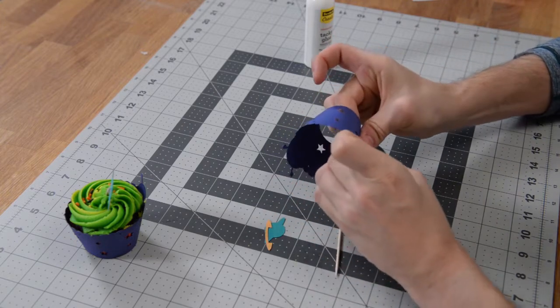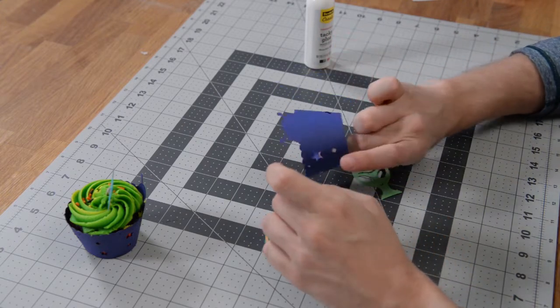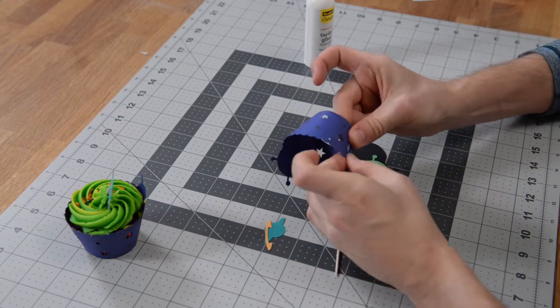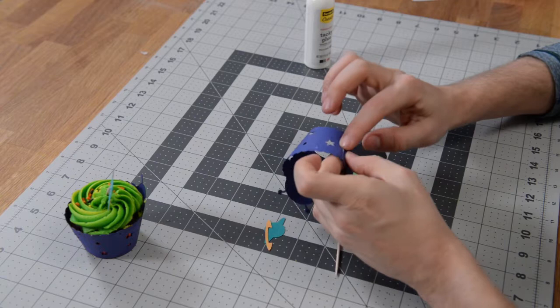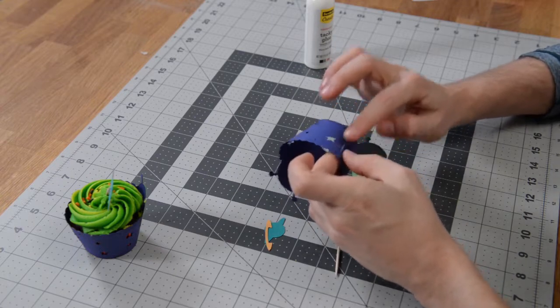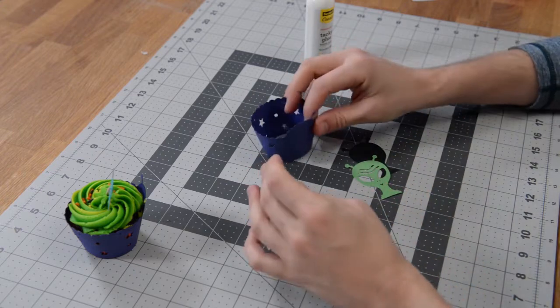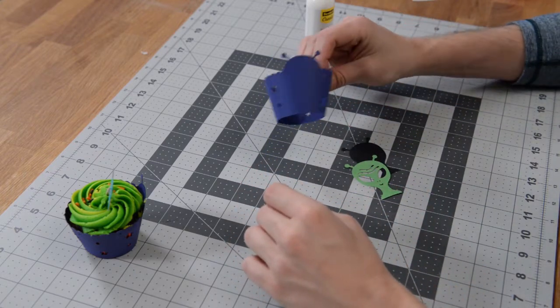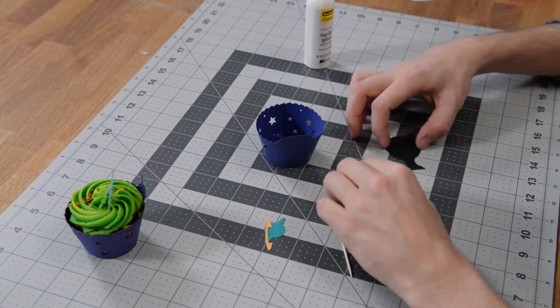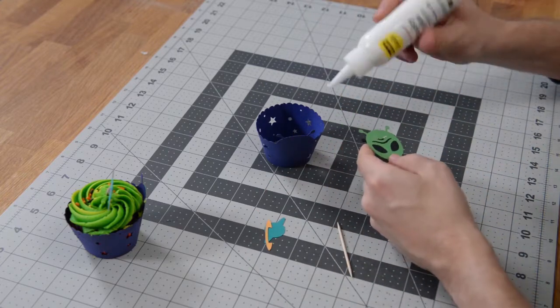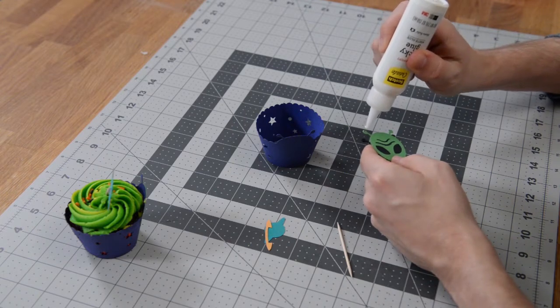Really hold that in place until it gets a good hold, because there's a lot of tension there and it may try to break away. But as long as you hold it in place for long enough, it will stay nicely for you. So there is the main part of the cupcake wrapper, and then we're going to take and glue our alien head to the little black layer.